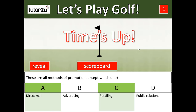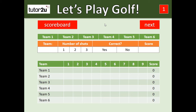When all of the teams have done that, you as the teacher can then reveal the actual correct answer — it was answer C in this case. Let's imagine we've got three teams playing. We click on team one — they just ringed one answer and got it correct, and there's their score. Team two put a ring around two answers but still got it correct — there's their score. Team three put a ring around two answers as well but actually got it wrong — there's their score.